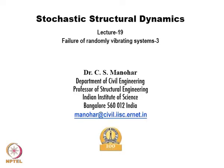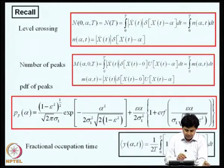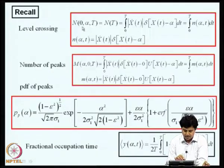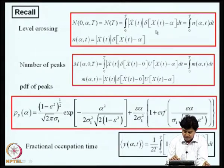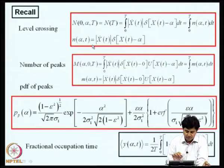We have been discussing the development of certain descriptors of random processes which help us to model failures of randomly vibrating systems. In this lecture, we will be discussing more on envelope and phase processes associated with a given random process. Before that, we will quickly recall what we have been doing. We have solved the problem of characterizing the number of times the level alpha is crossed in 0 to t by a random process X(t). This counter n(alpha, t) gives a rate of crossing of level alpha, and when X(t) is a Gaussian random process, we have been able to characterize some of the lower order moments of these rates.